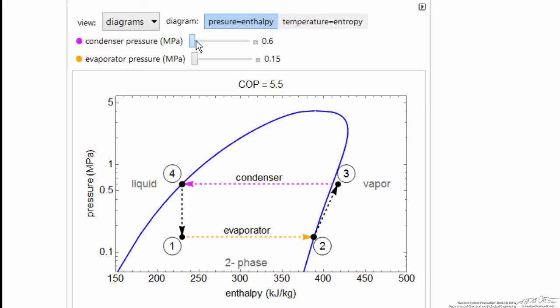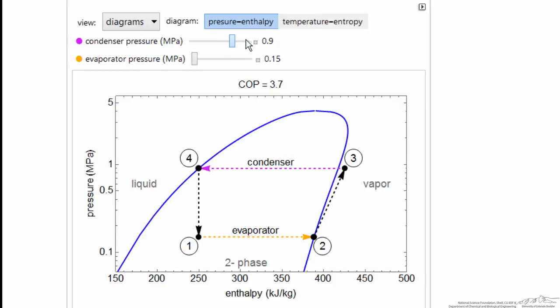If we increase that high pressure value, we put in more work and our coefficient of performance goes down. But we need the pressure high enough so the temperature is high enough so we can transfer heat to the surrounding.